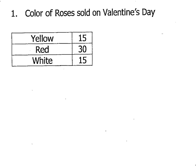In this lesson, we're going to learn how to make circle graphs of sets of data. The very first step when you want to make a circle graph is to find the percent for each category. I'm going to make a little column here for the percent. To find the percent for each category, we need to first find the total number in the data set.